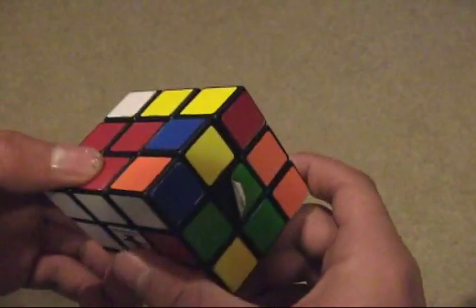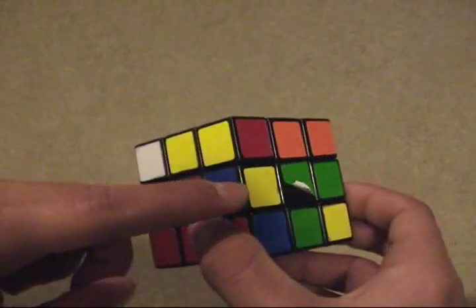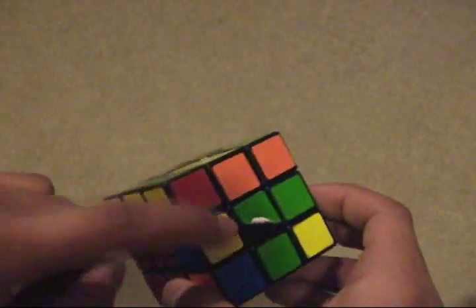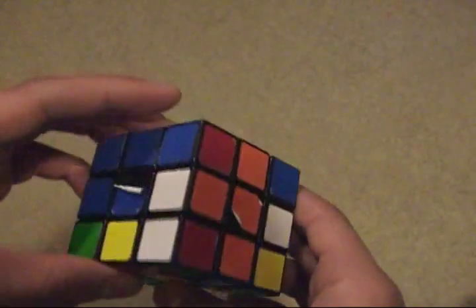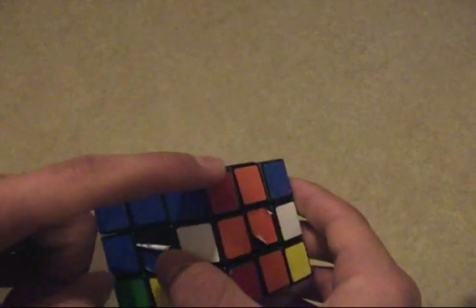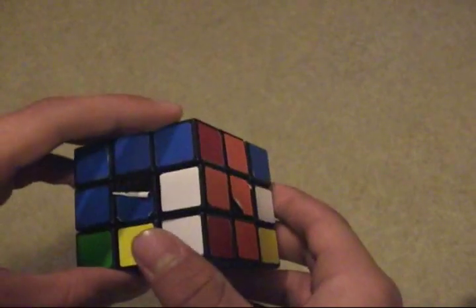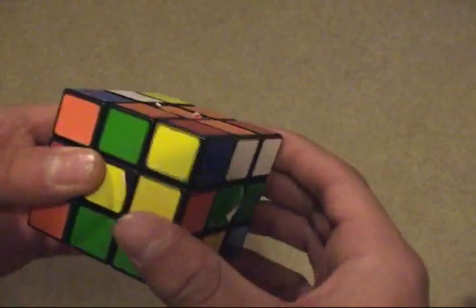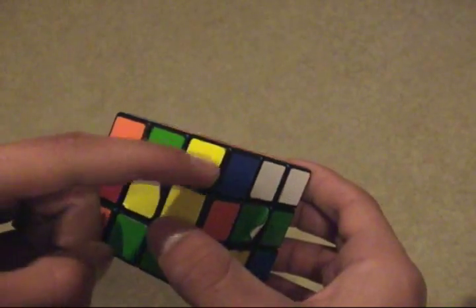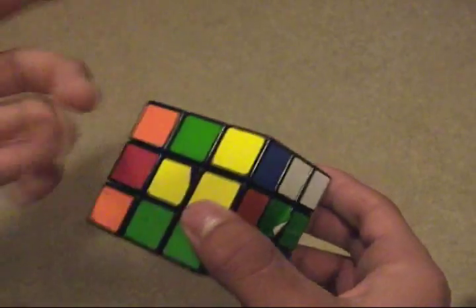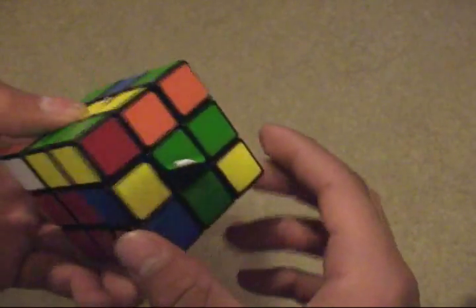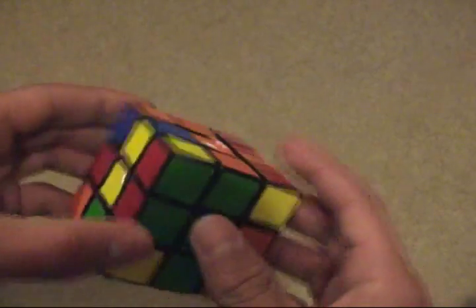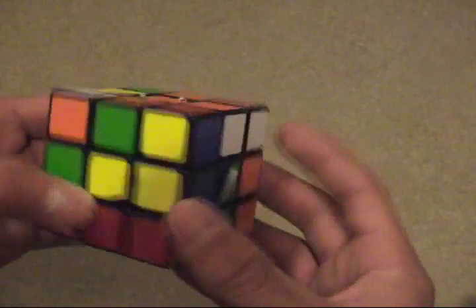What I want to do first is position this piece on the yellow layer with yellow facing up, and at the same time line it up with the corner. That's going to be pretty easy because the corner is already oriented in such a way that I can move the piece like this and pair it up.